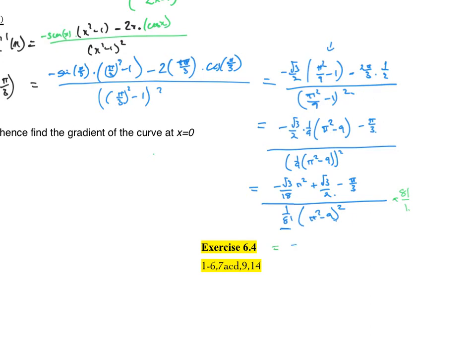So I've got 81 multiplying each of those terms on the numerator. Equal to, so what's 81/18? So 9 goes into both. That becomes 9/2. So let's go -9√3/2 π² + 81√3/2 - 27π, all over (π² - 9)².